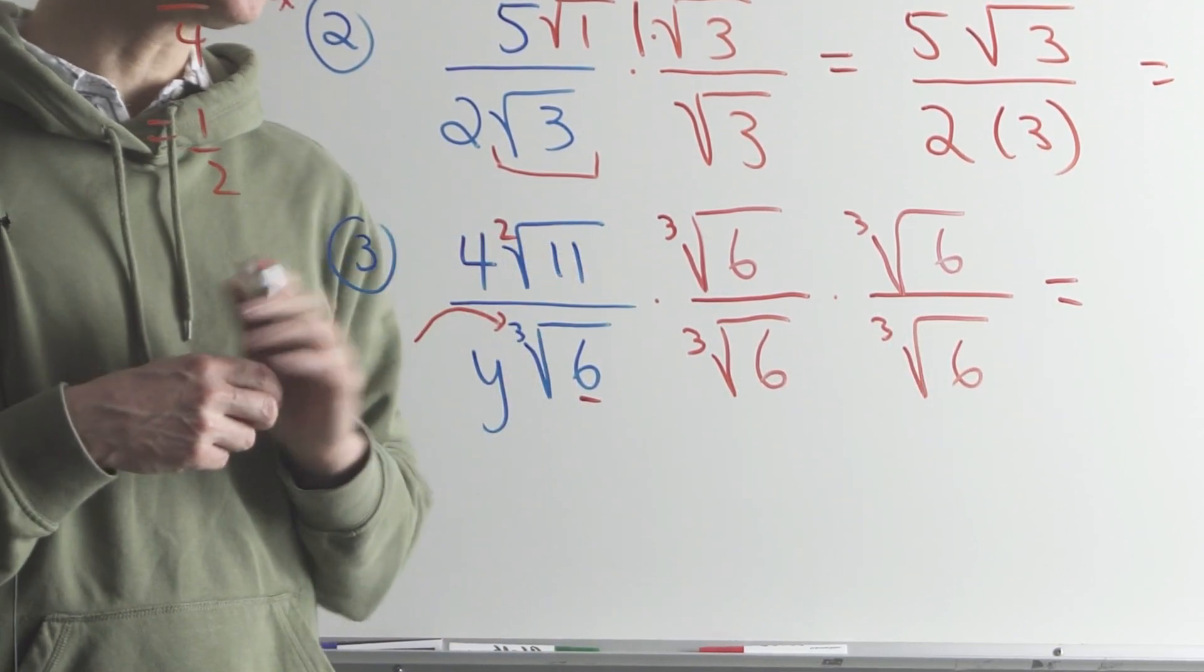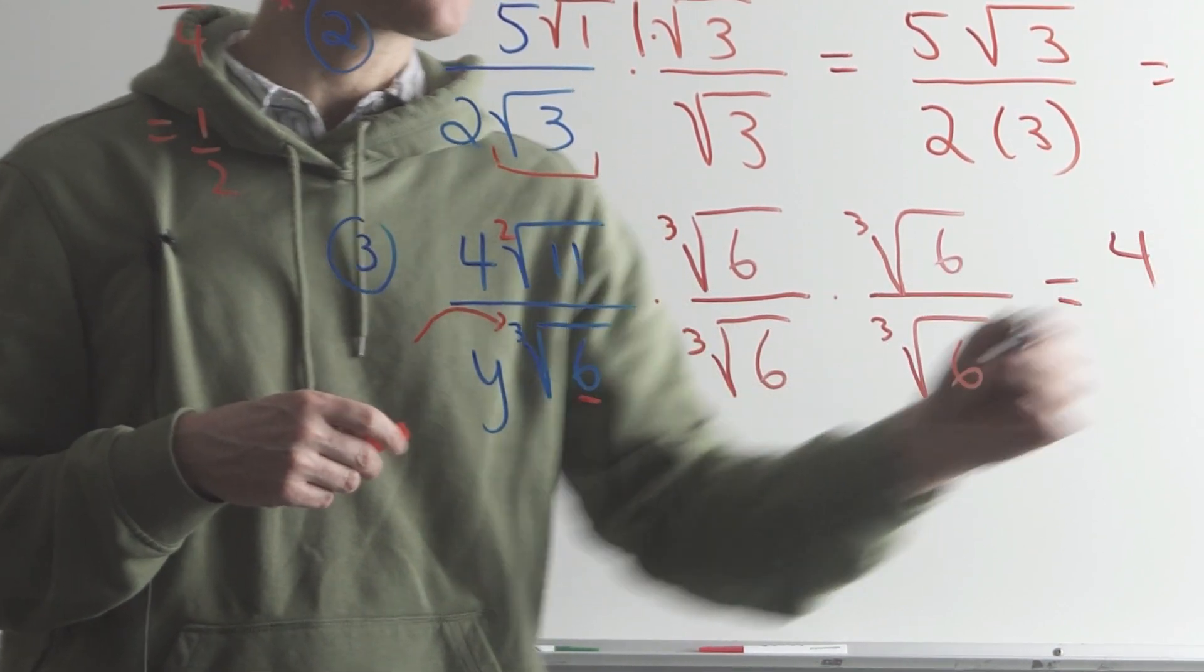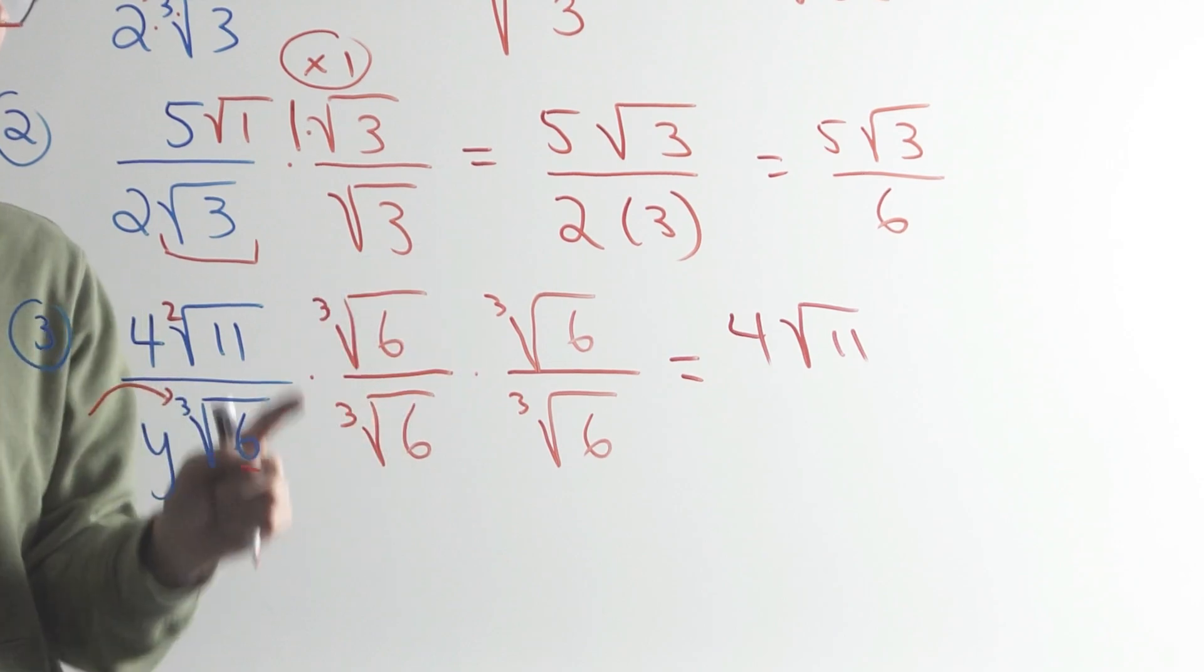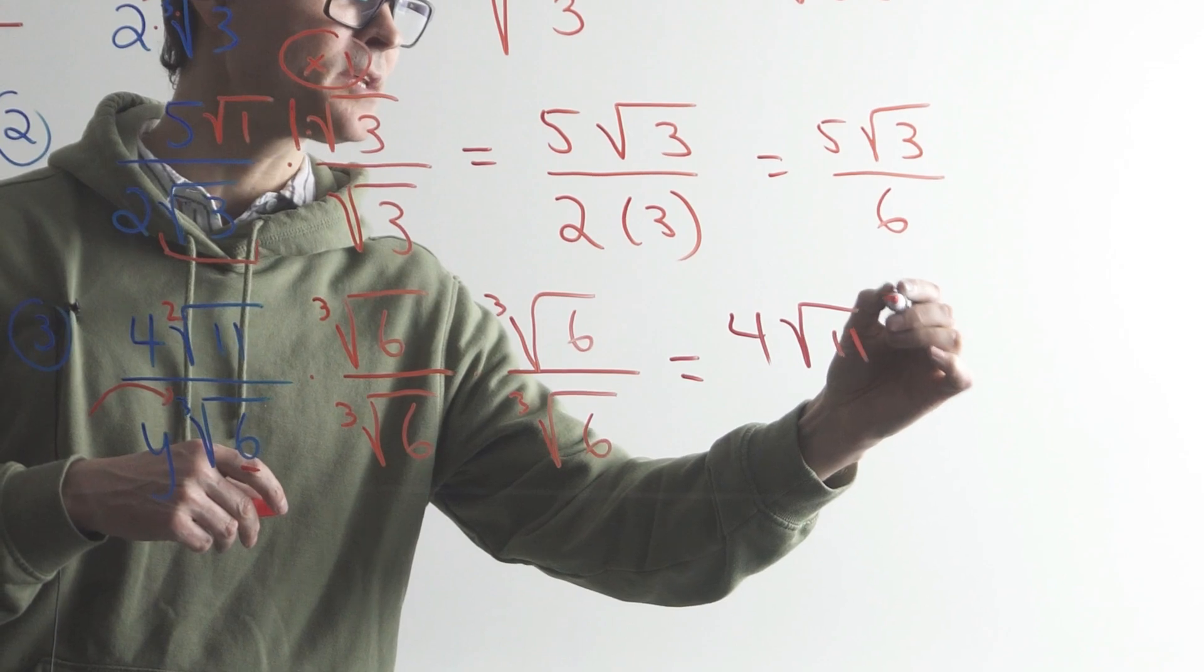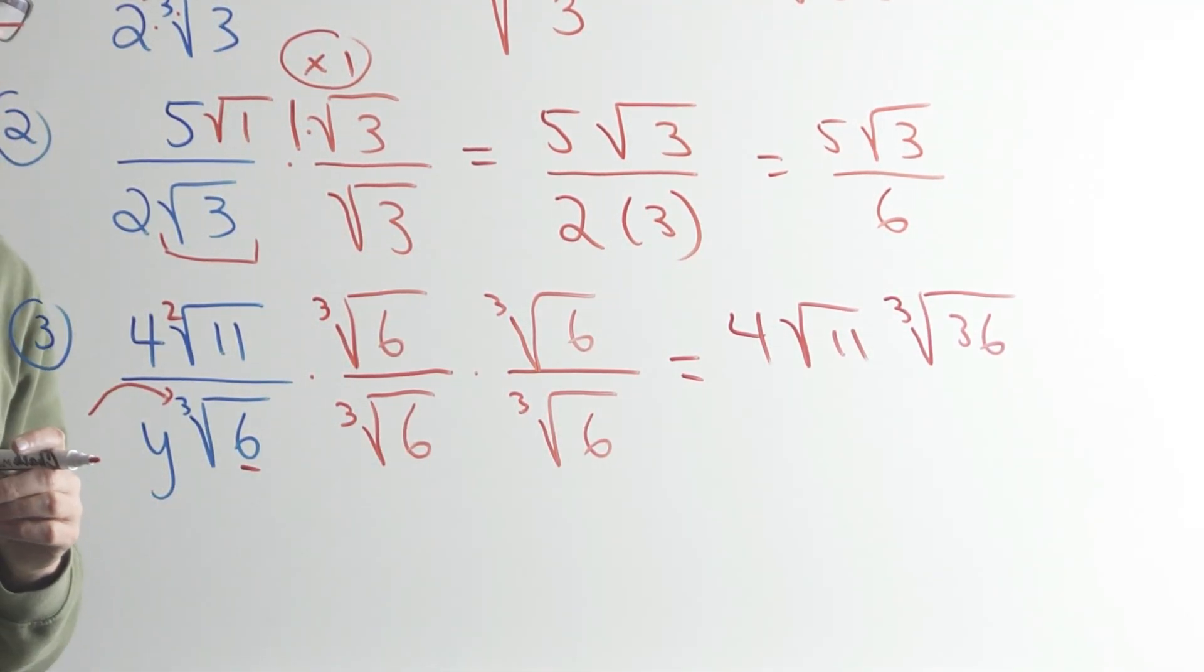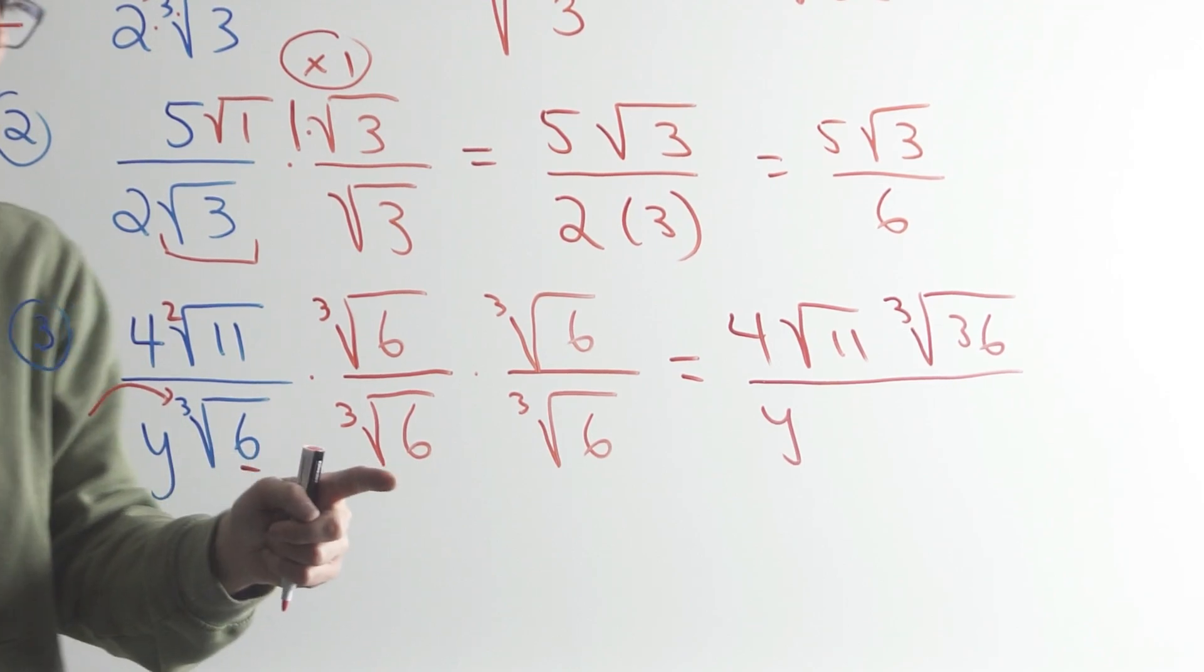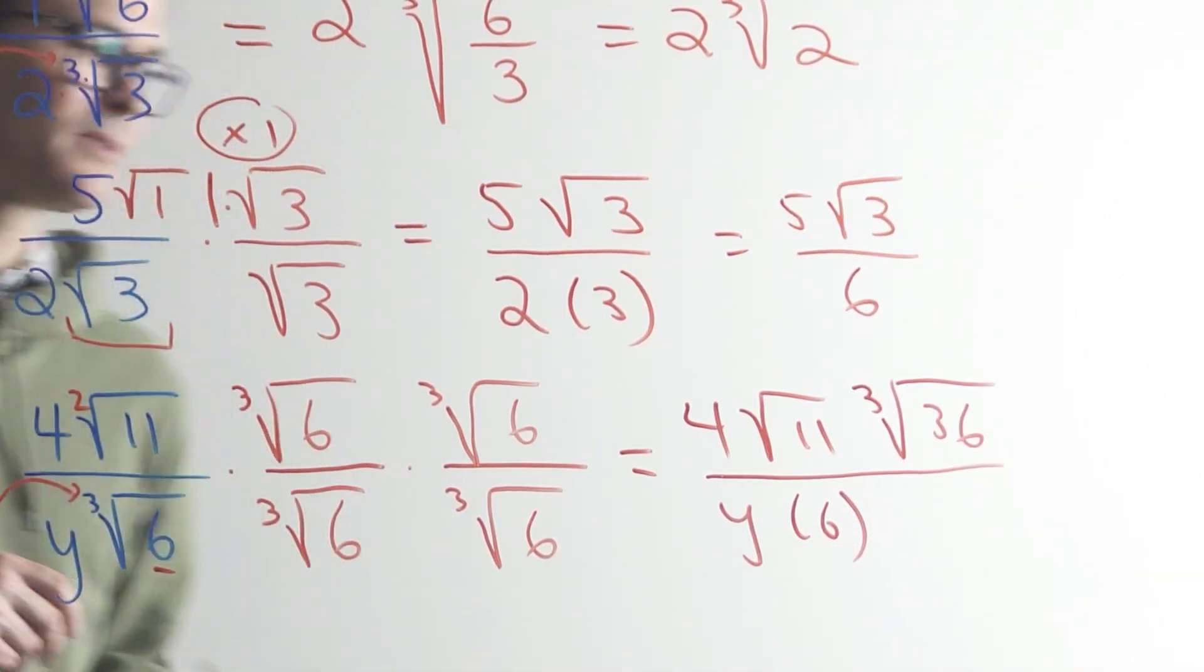Notice this is square root, so I can't combine the square root with the cube root. So here what I'm gonna do is I'm gonna write the four. That's already there. I'm gonna write the square root 11, because I can't do anything with that. But I can combine these, because they have the same indices, three. So I can multiply the sixes together. So that's gonna be cube root of 36. This looks really weird, I know. And now the y's already there in the denominator. I'm gonna write that as y. And so the cube root of six times the cube root of six times the cube root of six is actually just six.